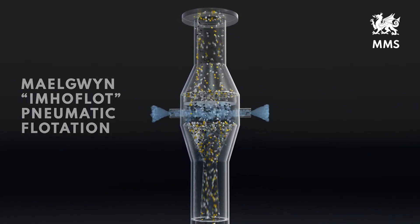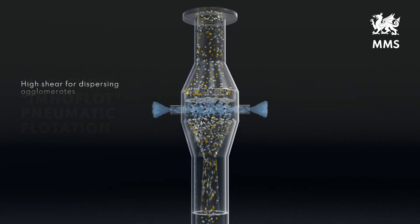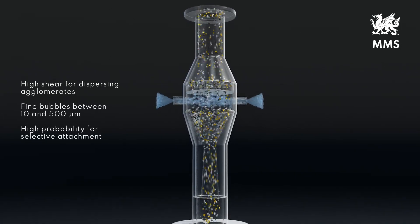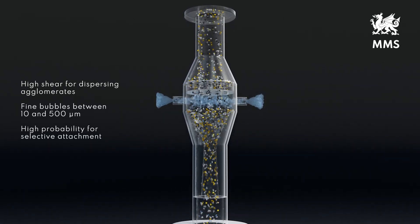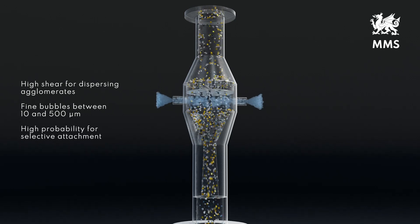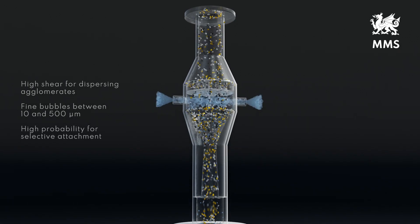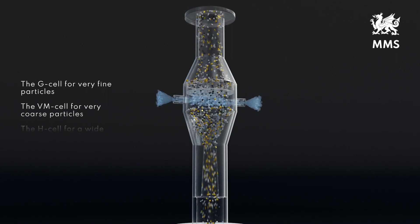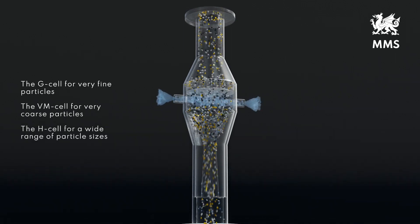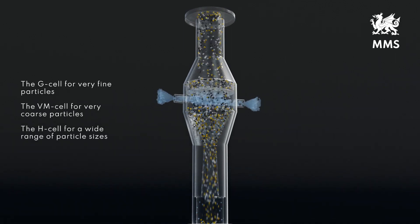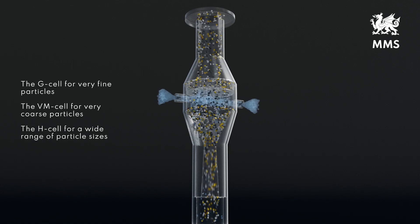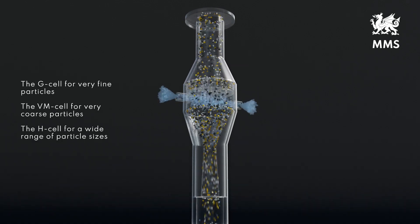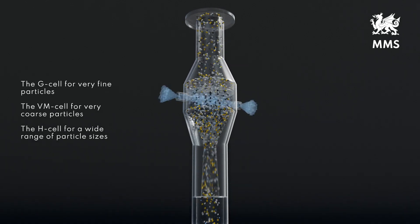The high shear in the reactor distributes the air in extremely fine bubbles that quickly collect the hydrophobic particles. The subsequent separator collects the bubbles under optimized conditions as a froth concentrate, with a minimized amount of incorrectly placed gangue particles. The standard Mylguin reactor applies to all separator types.